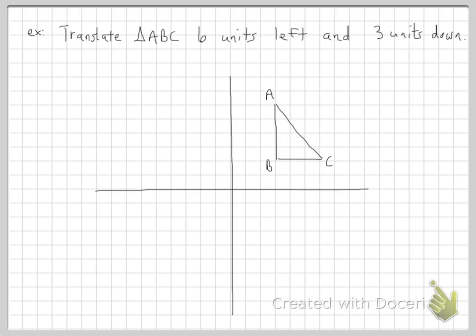Okay, so first of all, let's get these coordinates. So A has coordinates of 3, 6. B is 3, 2. And C is 6, 2.